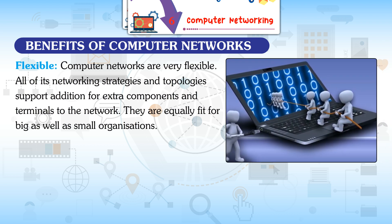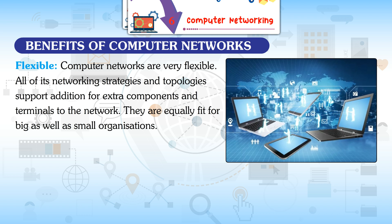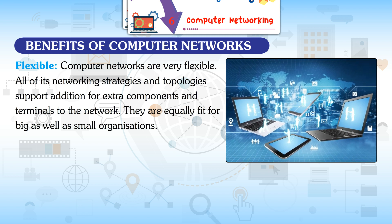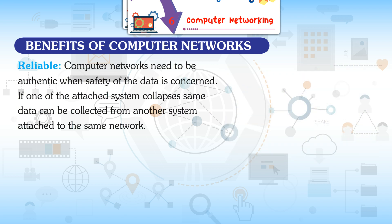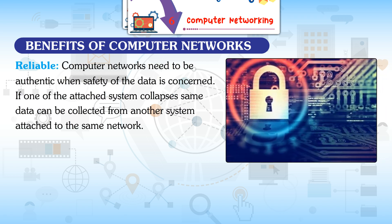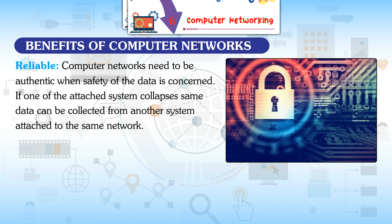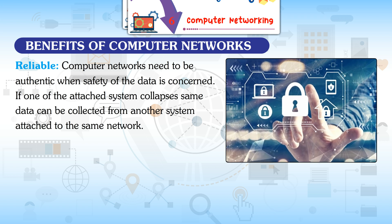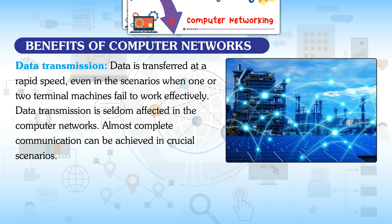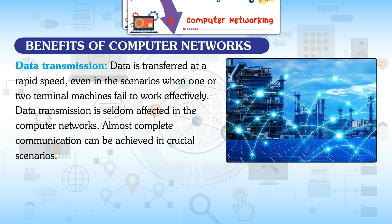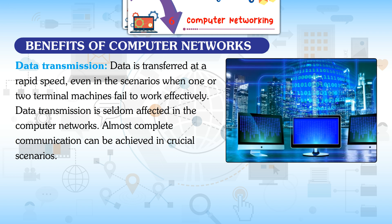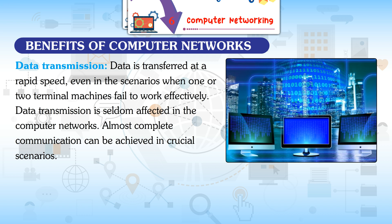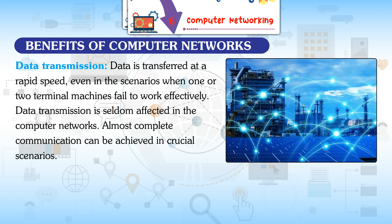Flexible: Computer networks are very flexible. All networking strategies and topologies support the addition of extra components and terminals, making them fit for big as well as small organizations. Reliable: If one attached system collapses, the same data can be collected from another system on the same network. Data is transferred at rapid speed, and even when one or two terminal machines fail, data transmission is seldom affected and almost complete communication can be achieved.